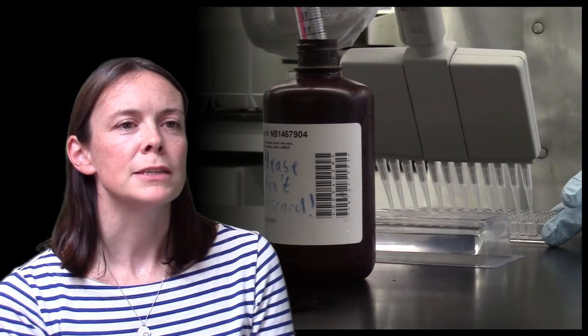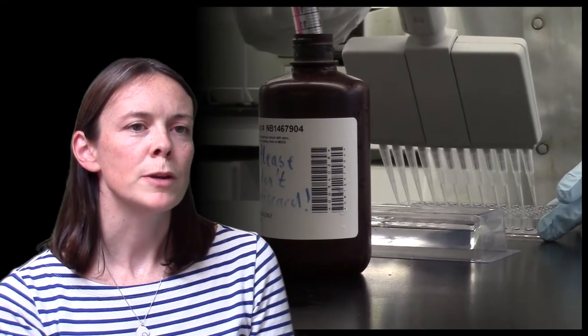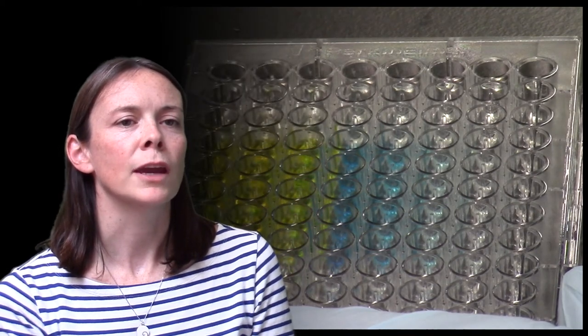Finally, the HRP is detected with addition of the TMB ELISA substrate which over a 10 minute period develops from a clear liquid into a blue solution. To stop the reaction, sulfuric acid stop solution is added producing a yellow liquid for quantification.